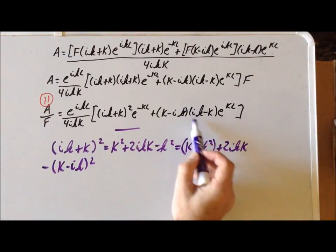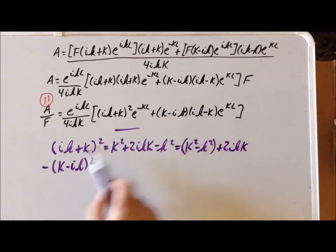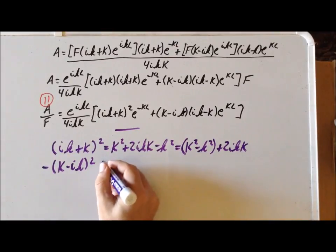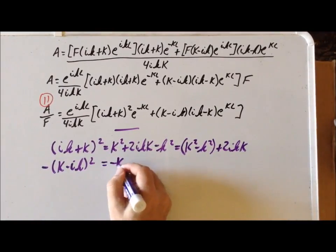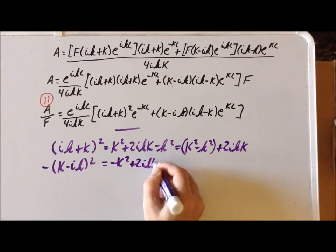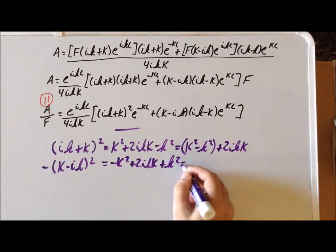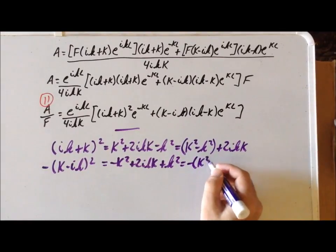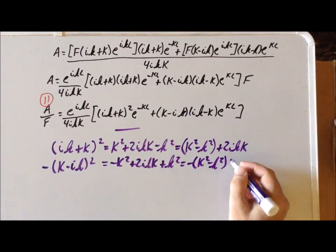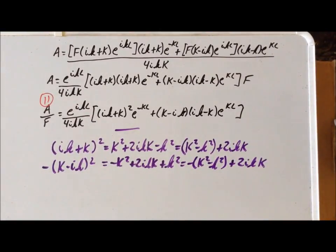Since we take this and multiply it by minus 1, it turns it into K minus i small k. We need a minus 1 to do that — that's where the minus 1 comes from. This gives us minus big K squared plus 2i small k big K plus small k squared, which can likewise be written as minus big K squared minus small k squared plus 2i small k big K. This will become essential in the next step in simplifying equation number 11.